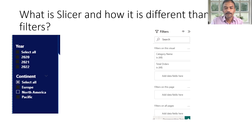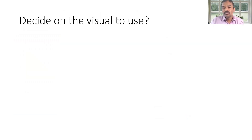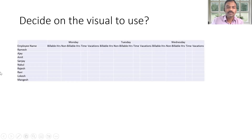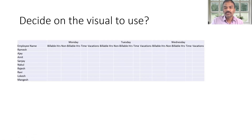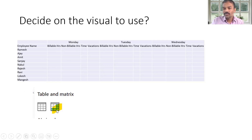For senior-level questions — suppose the interviewer asks you to display Monday, Tuesday, Wednesday with billable hours and non-billable hours — a normal table won't work. You should say that you would use a matrix visual for that.